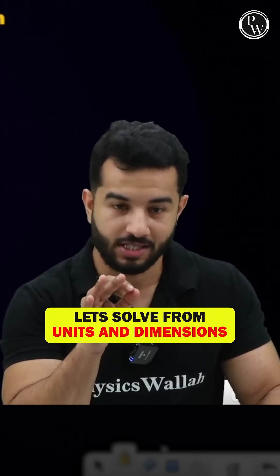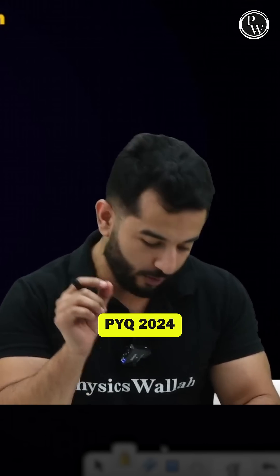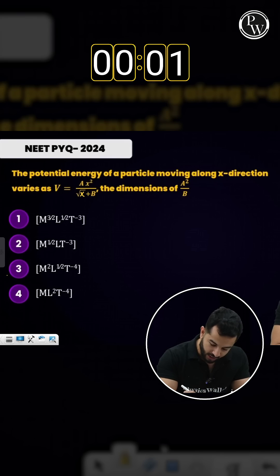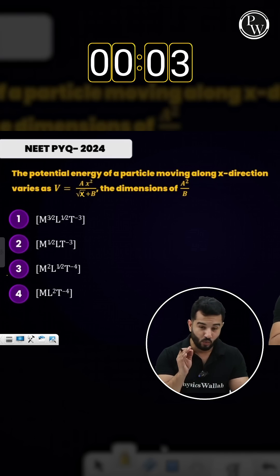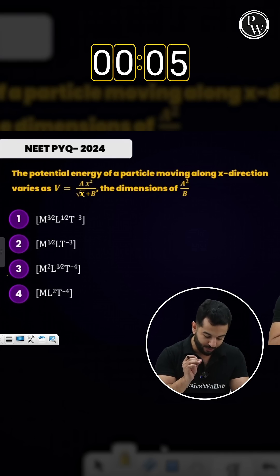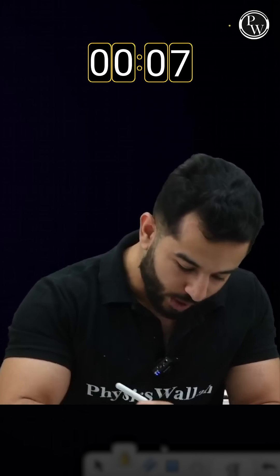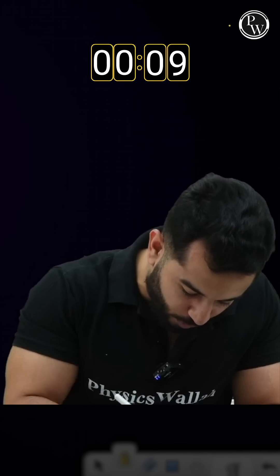Let's quickly take a look in one minute how we are going to solve this question from units and dimension. This is from PYQ 2024. The potential energy of a particle moving along x-direction varies as V equals ax squared divided by under root of x plus b.